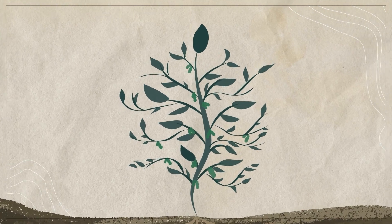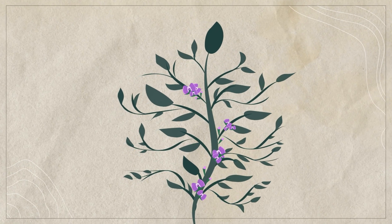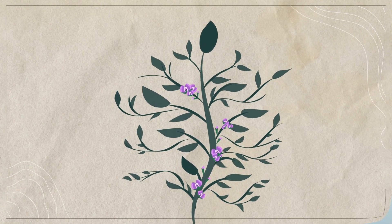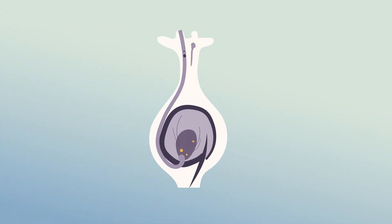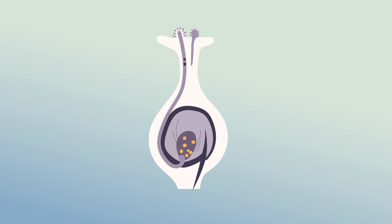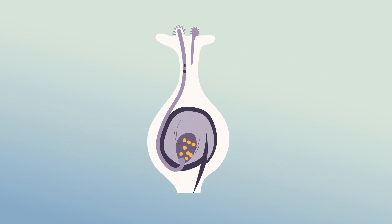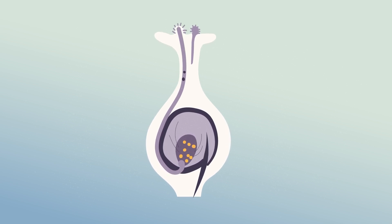Boron plays an important role in the pollen grain's germination and in the growth of the pollen tube. If this tube is not well formed, there will be no pollination, and thus, no grains.